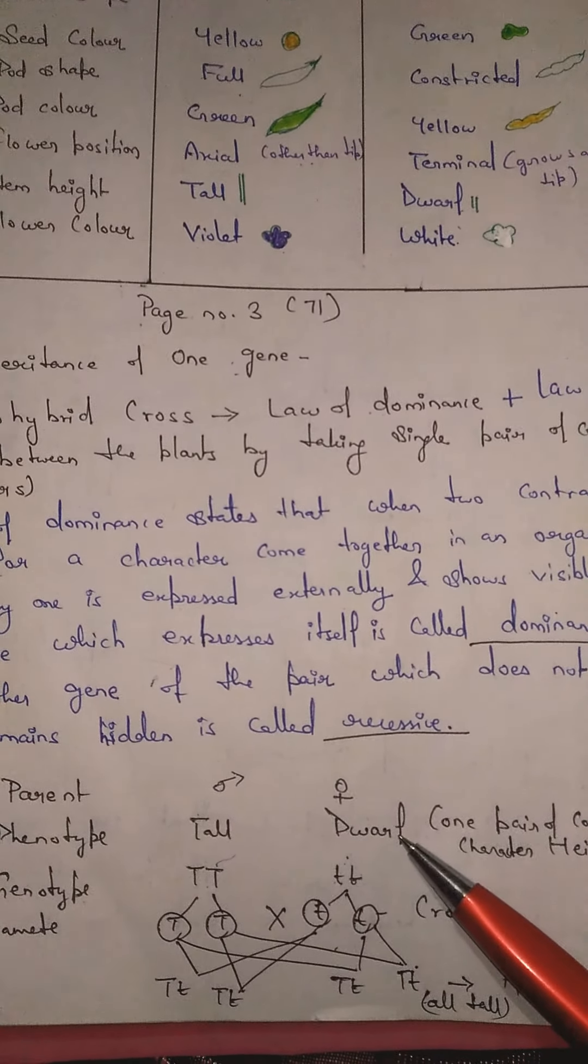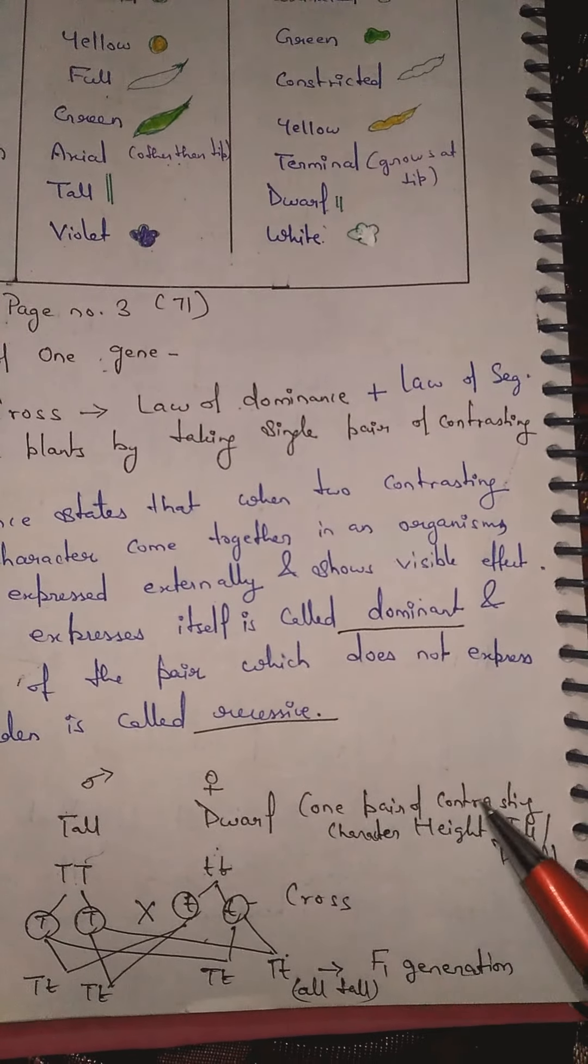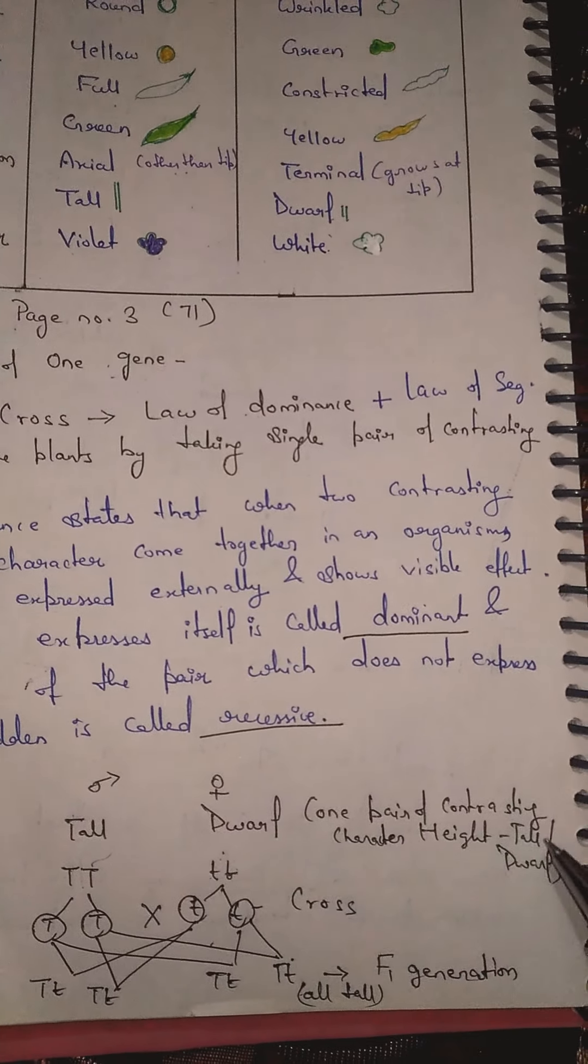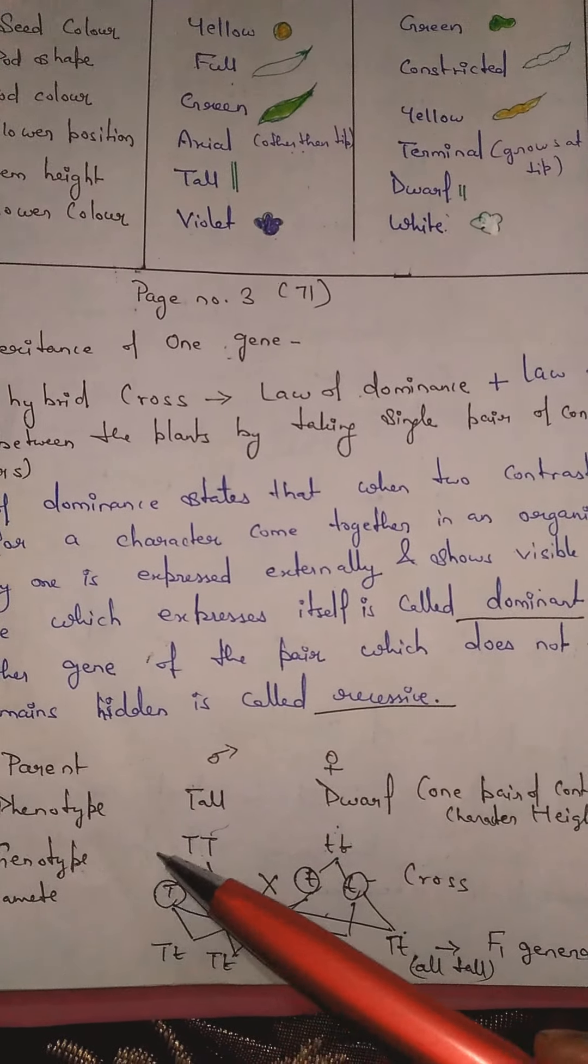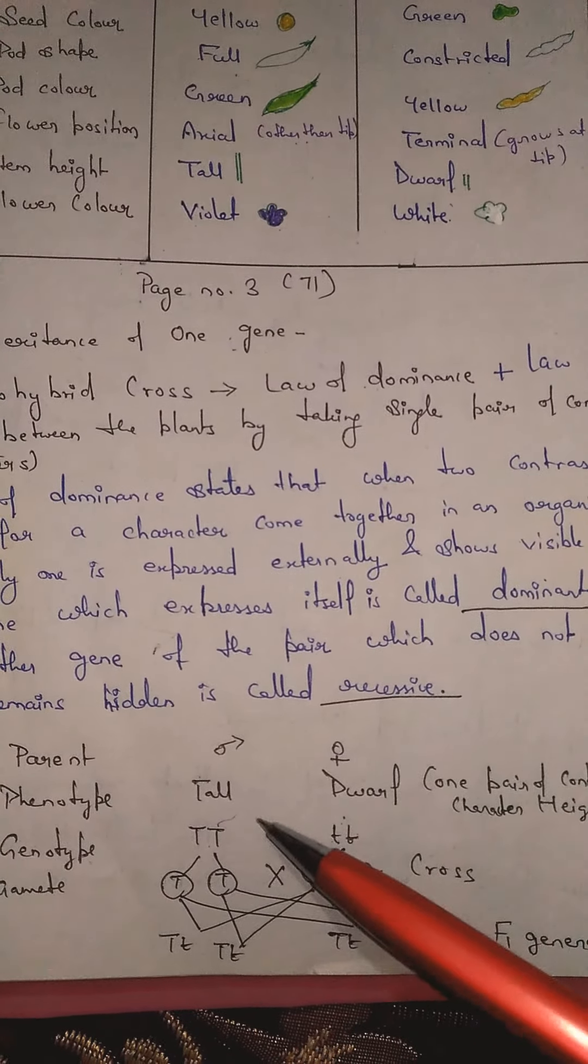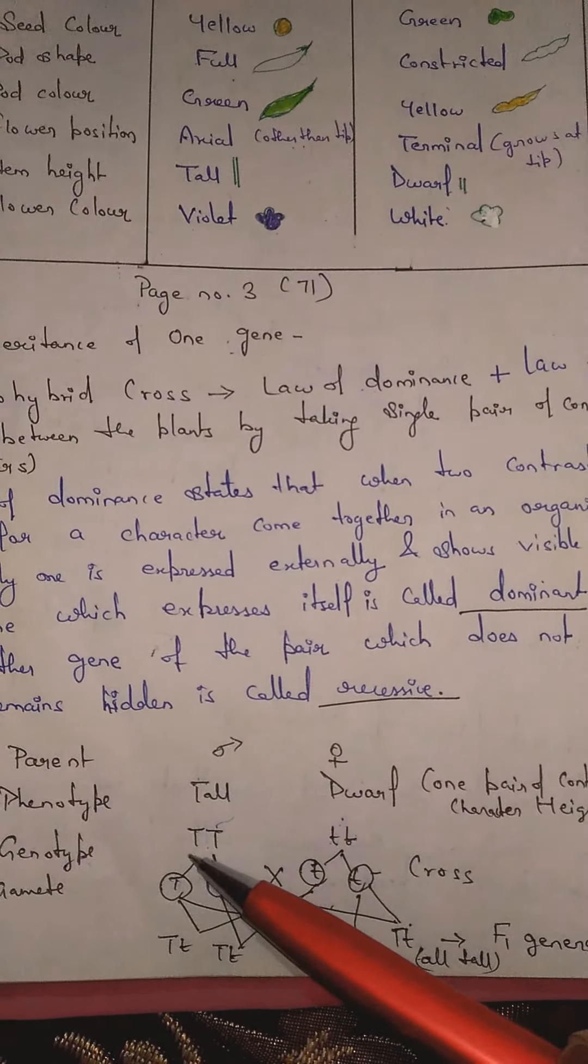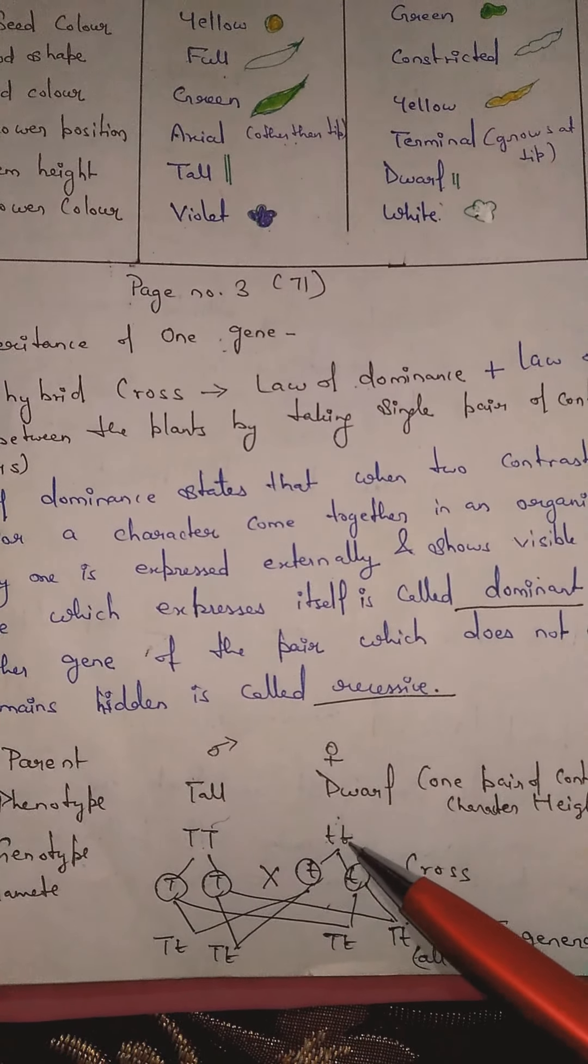One pair of contrasting character, here it is used - height is the contrasting character. Now genotype - gene which means the genes which are present inside.